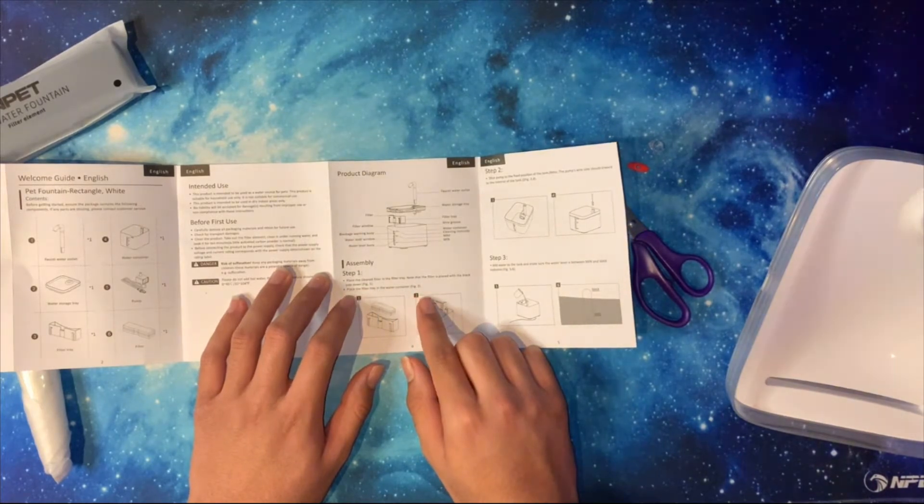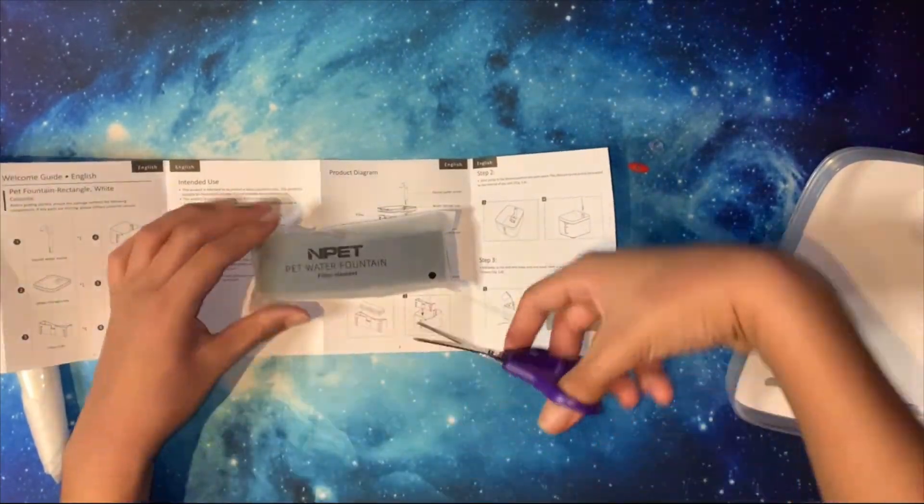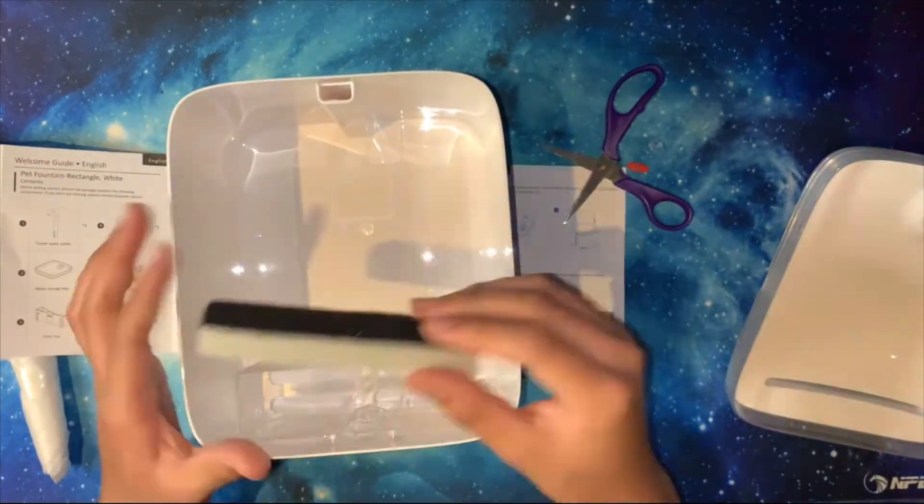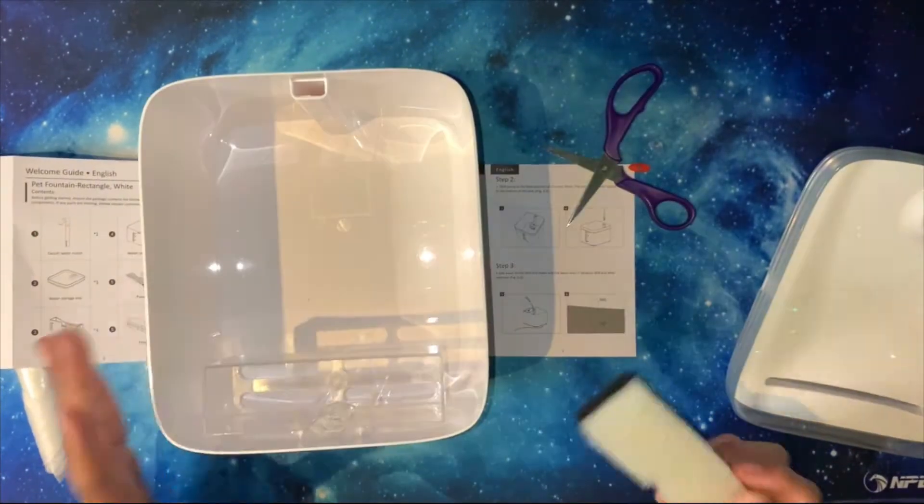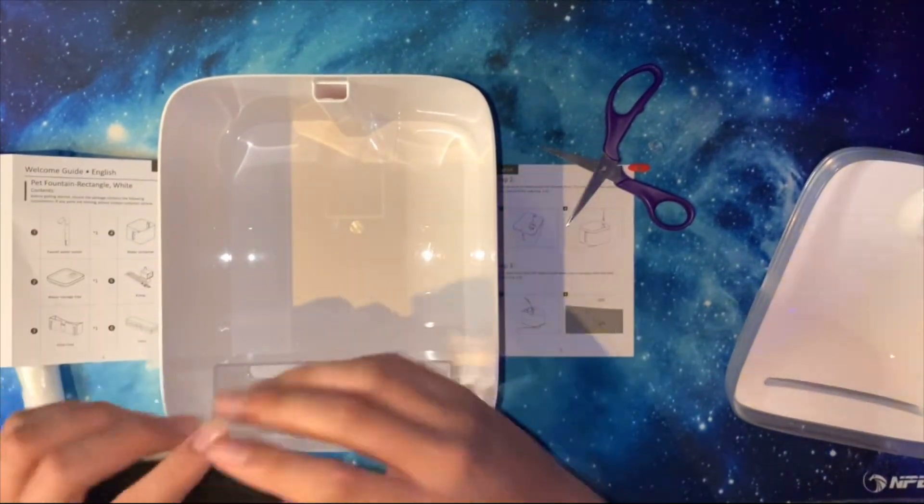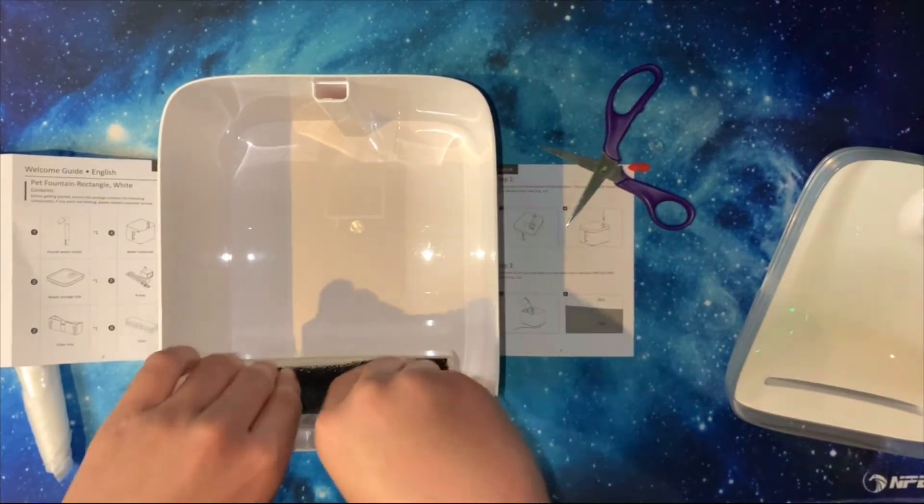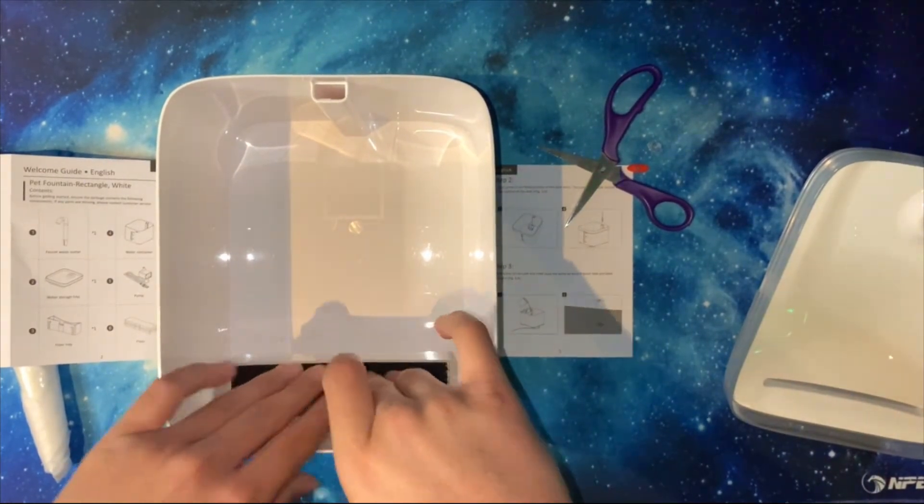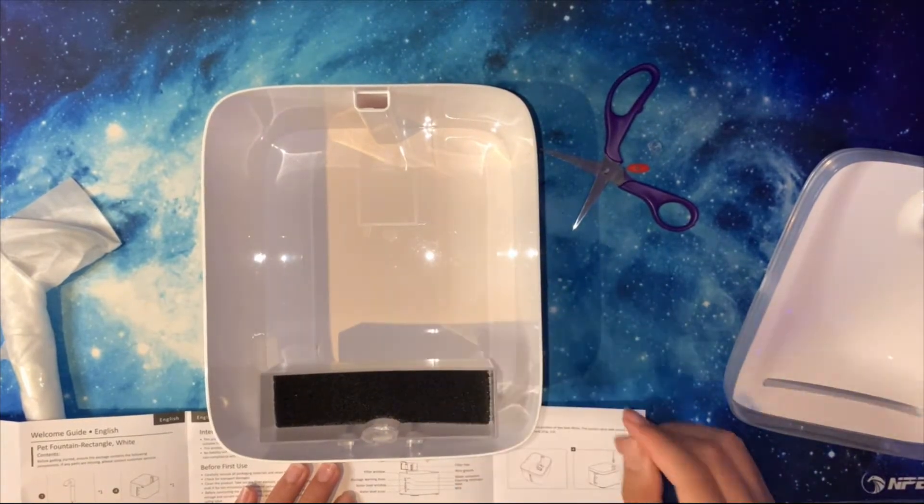Step one: please place the cleaned filter in the filter tray. So we're gonna do that. Gotta open the filter up, it's pretty quick. So I believe the filter tray is this here. Yes, this is the filter tray I just checked and it goes like this. I just read on the manual it says the black side should be facing up, so I'm just gonna place it in there. Kind of compressed. Okay, first step is accomplished.